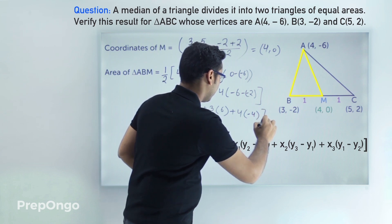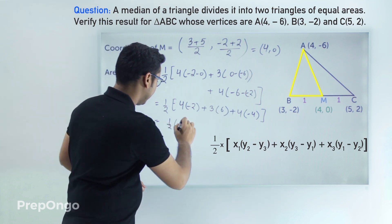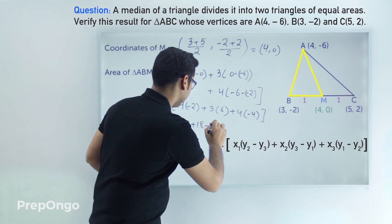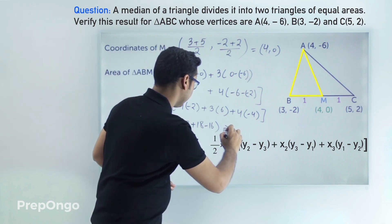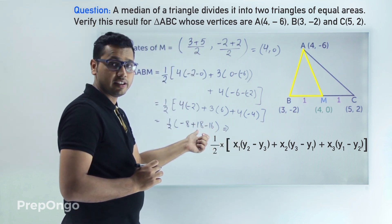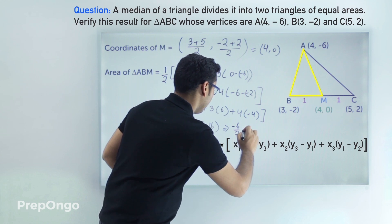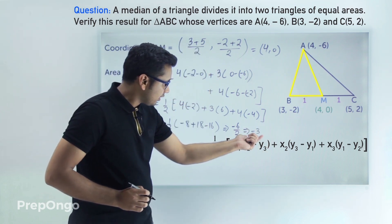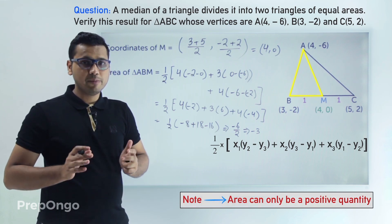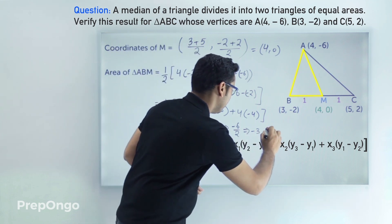Solving further: -8 + 18 - 16 = -6. So the area = -6/2 = -3. Since area cannot be negative, we drop the negative sign. The area of triangle ABM is 3 square units.